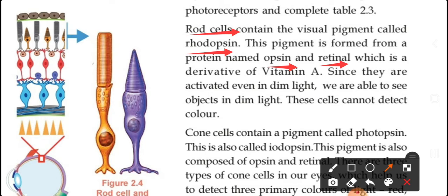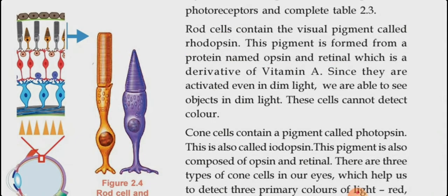Since rod cells are activated even in dim light, we are able to see objects in dim light. These cells cannot detect color. So the main function of rhodopsin is vision in dim light — it helps us to see objects in dim light. The pigment is rhodopsin, its contents are opsin and retinol, opsin is a protein, retinol is formed from vitamin A, and this helps us to see in dim light.